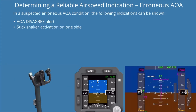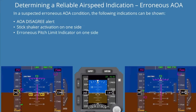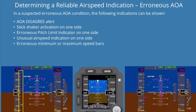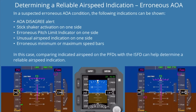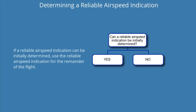Additional indicators include stick shaker activation on one side, erroneous pitch limit indicator on one side, unusual airspeed indication on one side, and erroneous minimum or maximum speed bars. Comparing indicated airspeed on the PFDs with the ISFD can help determine a reliable airspeed indication. If a reliable airspeed indication can be initially determined, use it for the remainder of the flight.